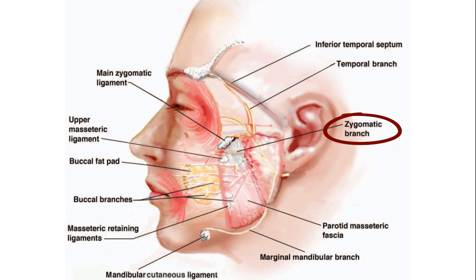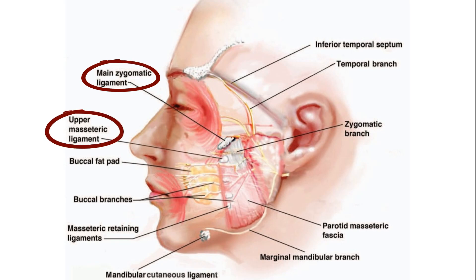The zygomatic retaining ligaments are landmarks for the zygomaticofacial nerve branches. Furnace was the first to show that a zygomatic branch passes in a deep plane just inferior to the zygomatic ligament. A recent study showed that the main zygomatic and upper masseteric retaining ligaments, located at a mean of 11 mm from each other, create a pathway where an upper zygomatic nerve passes in a deep plane, 4 mm deep to the deep fascia. A lower zygomatic nerve passes just inferior to or penetrates the upper masseteric ligament at a more superficial level, 1 mm deep to the deep fascia, and pierces the deep fascia just distal to the ligament.